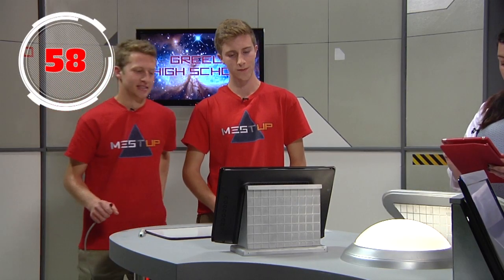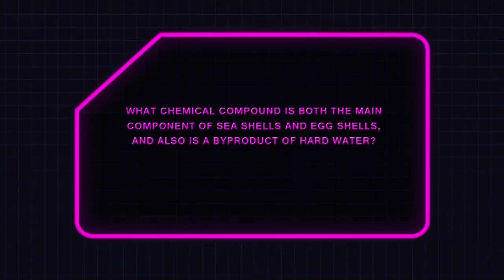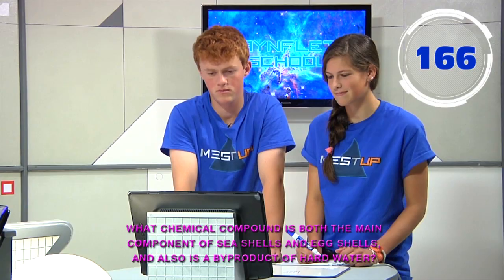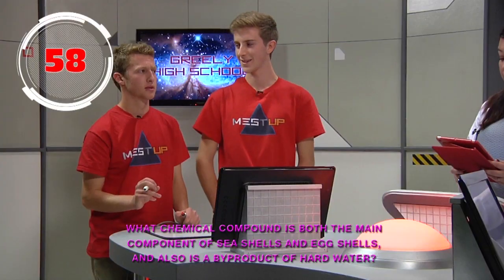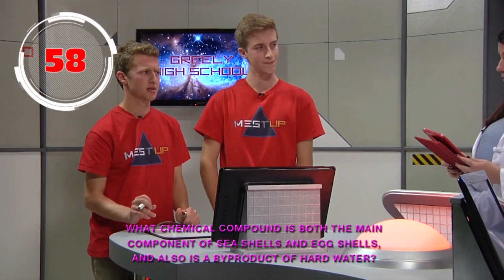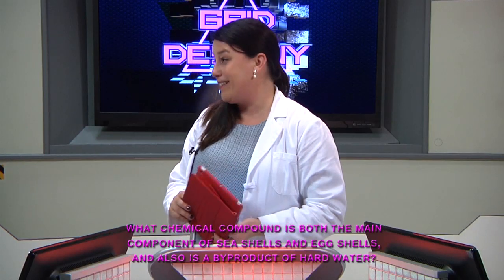Engineering for 25. What chemical compound is both the main component of seashells and eggshells and also a byproduct of hard water? Red team answers calcium carbonate. That's correct.